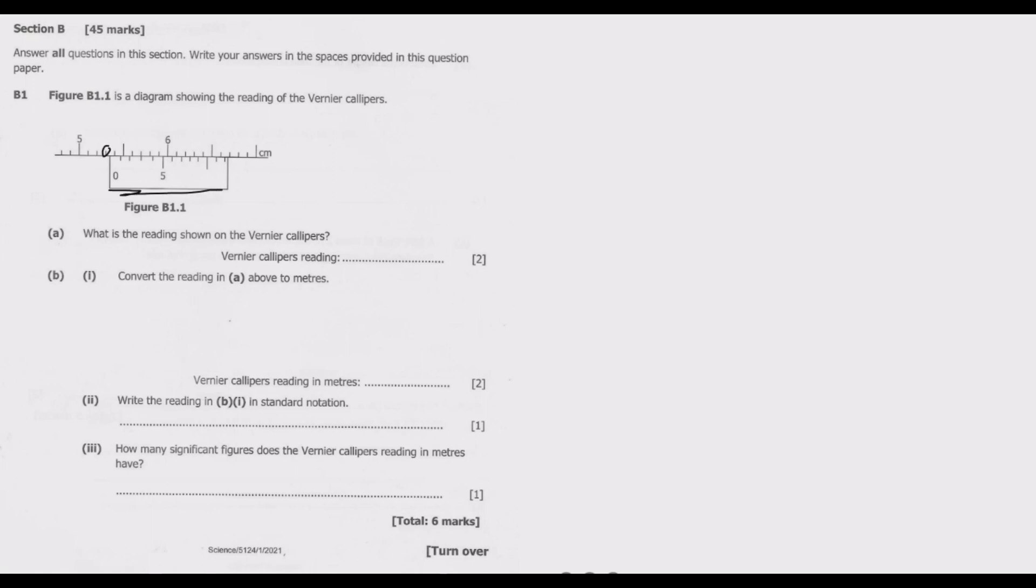To be sure, we need to count the number of subunits in between 5 and 6. We have basically 1, 2, 3, 4, 5, 6, 7, 8, 9, 10. So basically 10 subunits, meaning each subunit is 0.1.